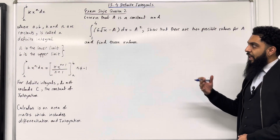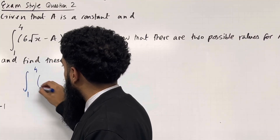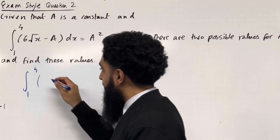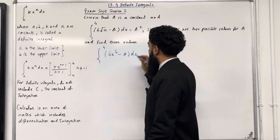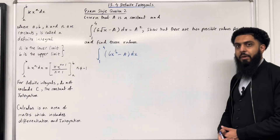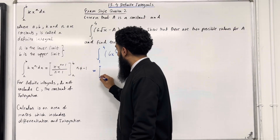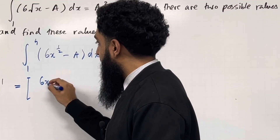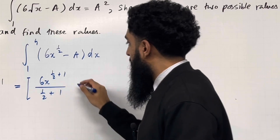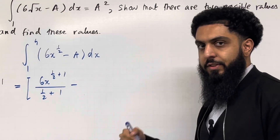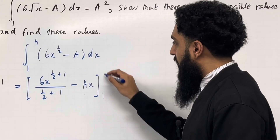Let's start off by looking at the left hand side. We've got the integral from 1 to 4 of the first term, which we can rewrite as 6x to the power 1 half, then minus a dx. Now I'm going to apply term by term integration. Open square bracket, 6x to the power 1 half plus 1, divide by 1 half plus 1. Minus a is a constant, so this integrates to ax. Close square bracket, taking limits from 1 to 4.